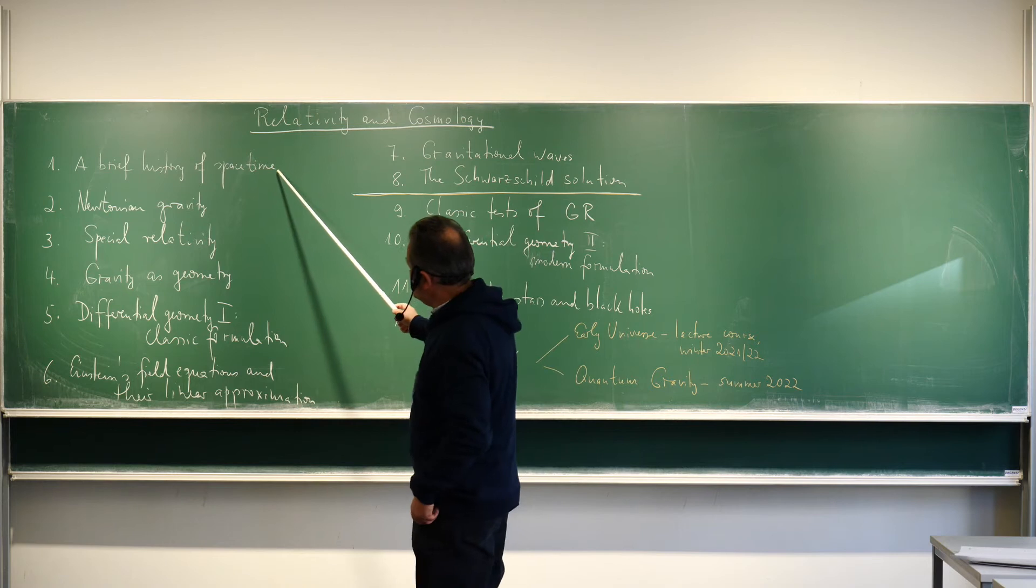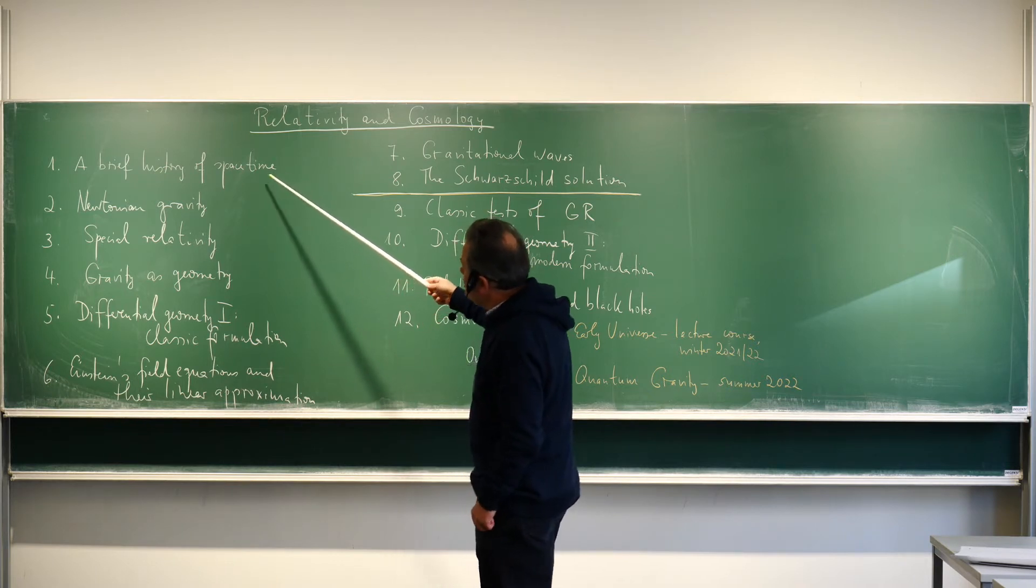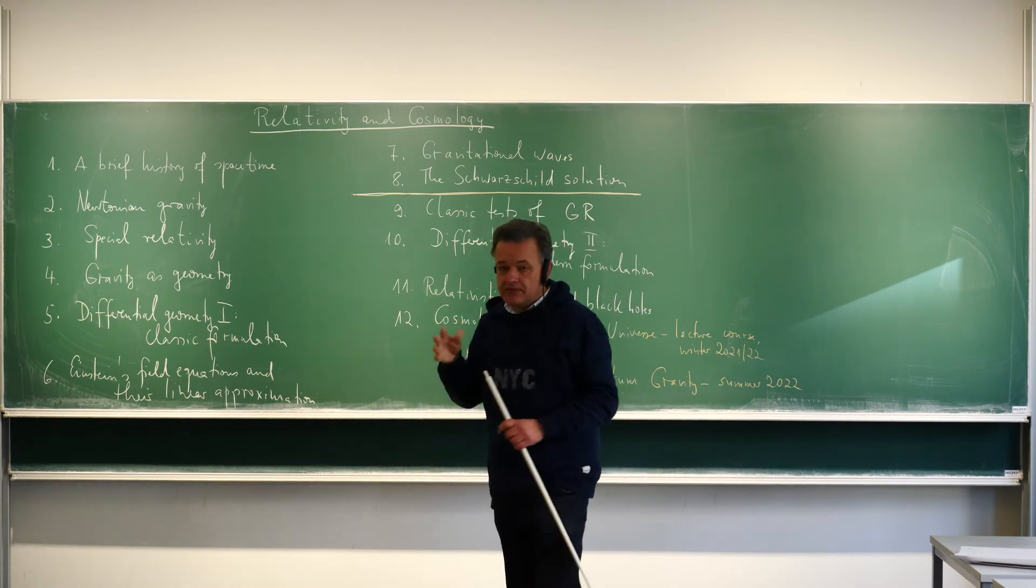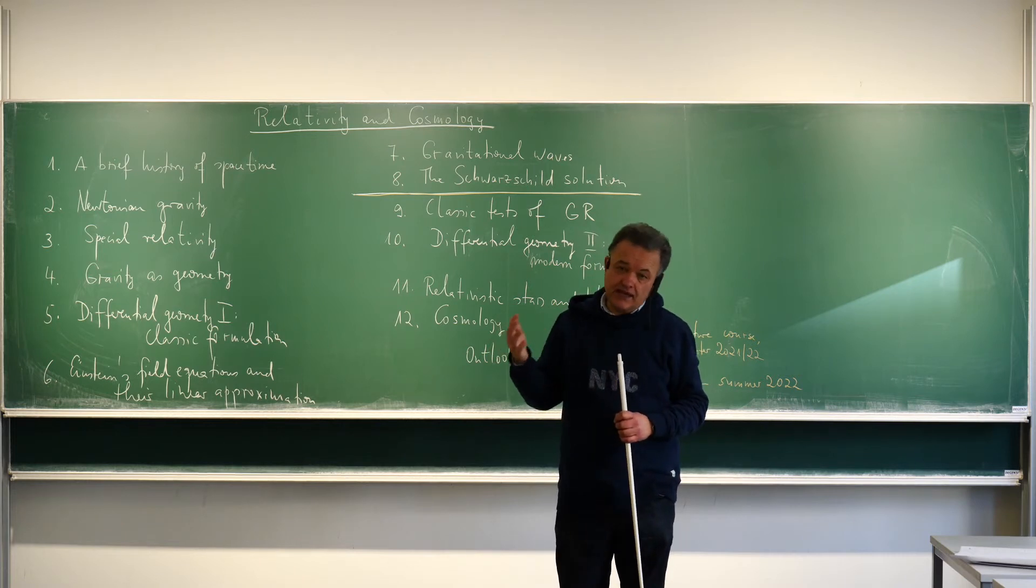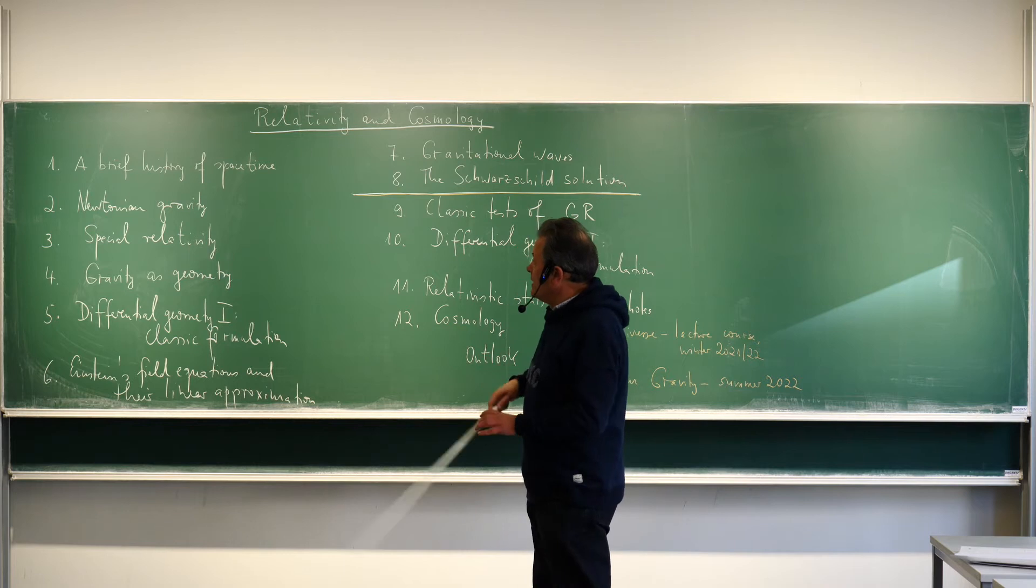So I first gave, because it's the geometry of space-time, a brief history of space-time. So from Newton to Einstein or at least to special relativity. Newton, absolute space-time, there were alternatives from Leibniz but they were not really appreciated at that time until special and general relativity.